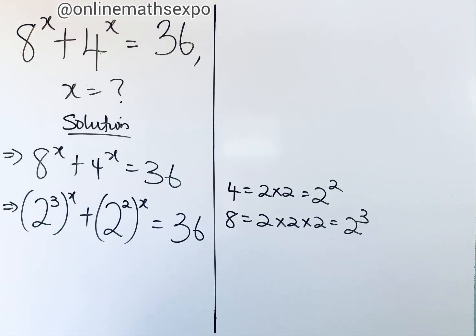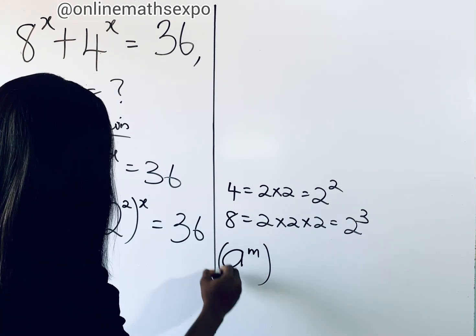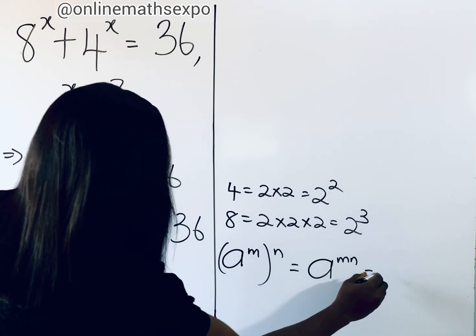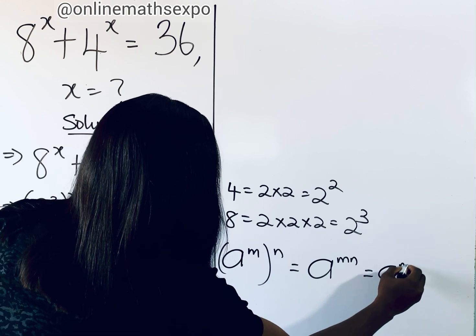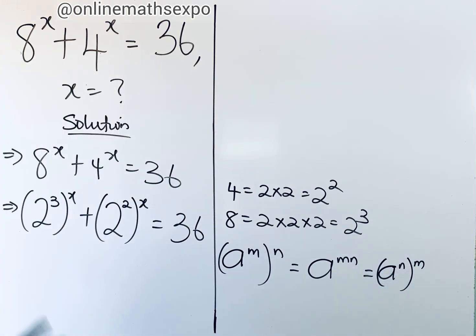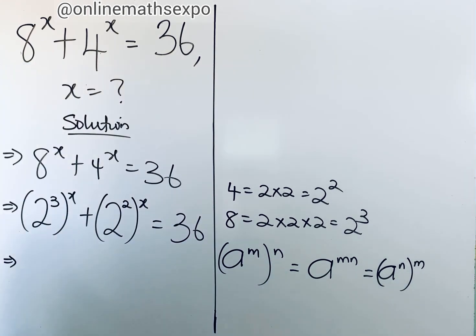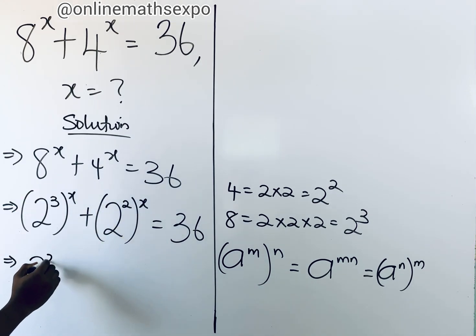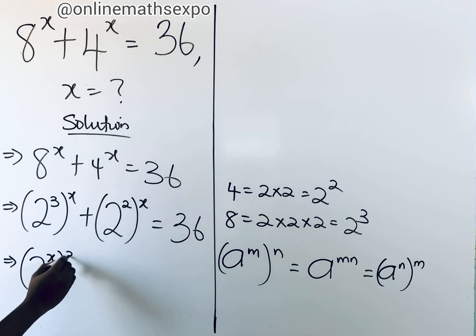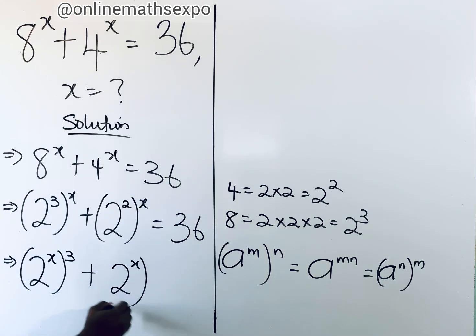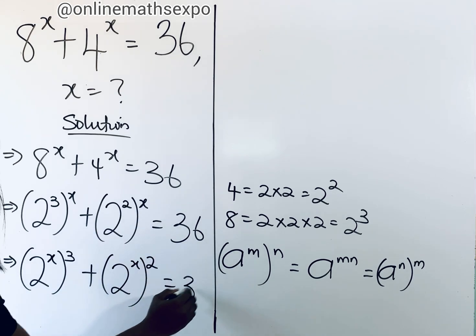Remember that for every a to the power of m, to the power of n, it is the same as a to the power of m·n, which is also the same as a to the power of n raised to the power of m. We are going to apply this here, so we can switch the powers. We get x to the third power in the first term, and 2 to the power of x raised to the power of 2 in the second term, equal to 36.